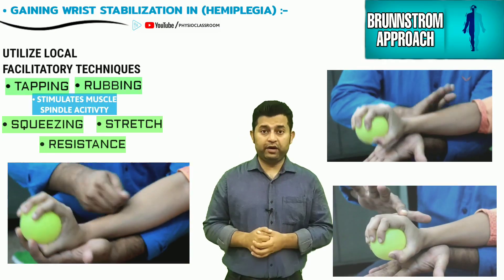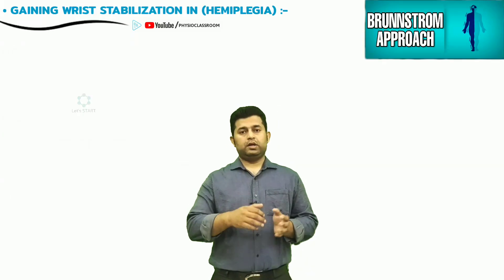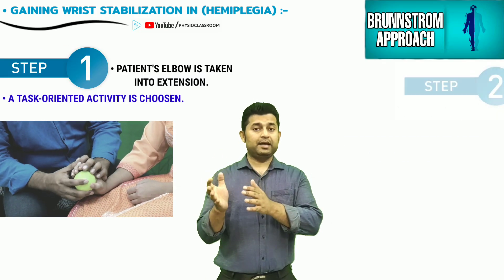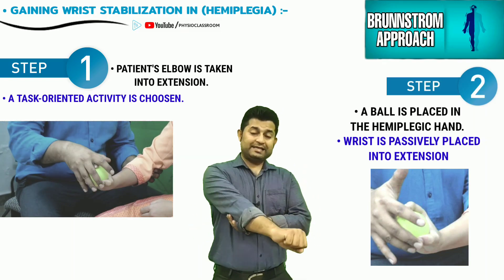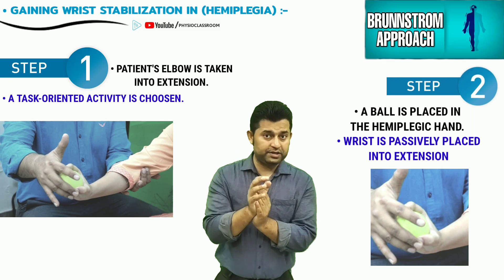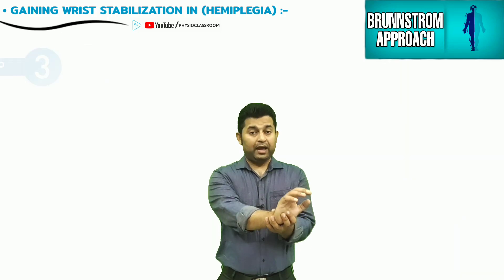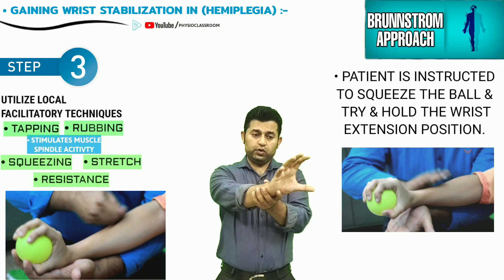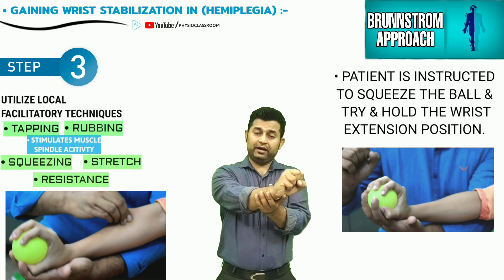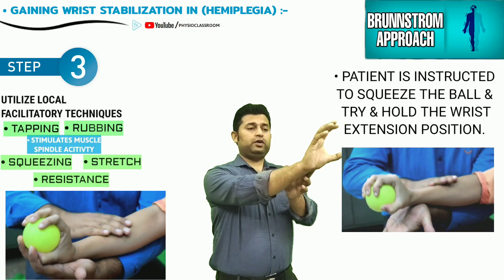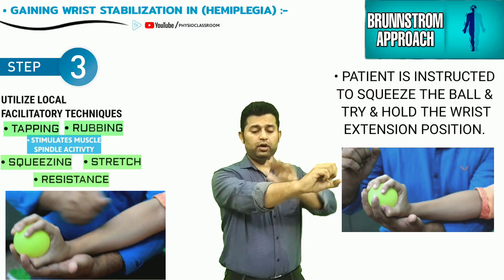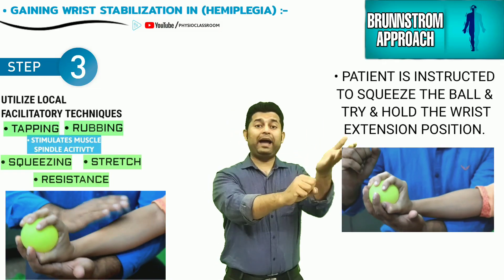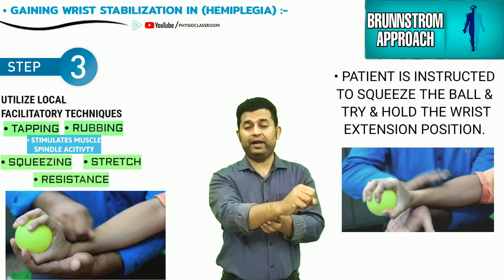From stage 2 and stage 3, an exercise can be designed as follows: the physiotherapist places the hemiplegic upper limb in the extensor synergy position, places a ball in the patient's hand, and then passively extends the wrist. The therapist uses local stimulatory techniques — tapping, rubbing, squeezing — and asks the patient to squeeze the ball tightly while not letting the wrist fall down. This activates the muscle spindles and gains reflexive extension by strengthening the muscle stretch reflex of the wrist extensor muscles.